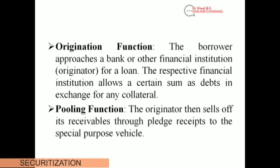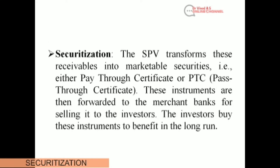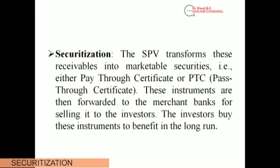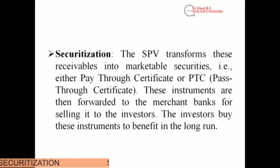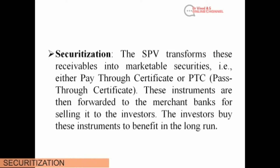After the origination function, the next step is the pooling function. In the pooling function, the originator sells its receivables through pledge to a Special Purpose Vehicle (SPV). The third step is the securitization process itself: the SPV transforms these receivables into marketable securities, either through a Pay Through Certificate (PTC) or Pass Through Certificate. These instruments are then forwarded to merchant banks for selling to investors.